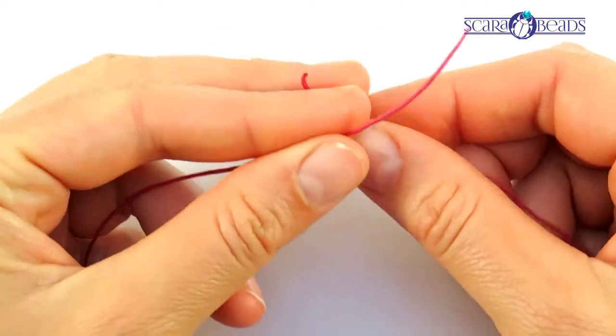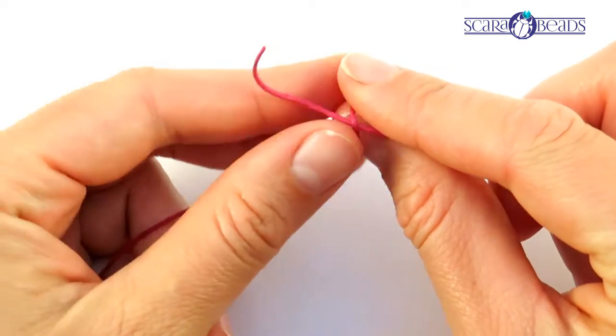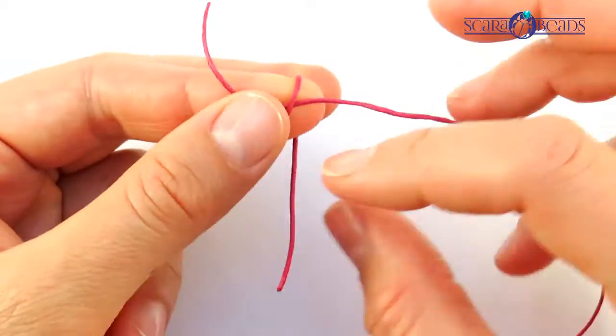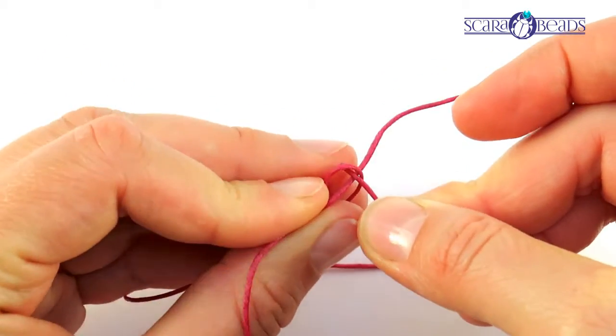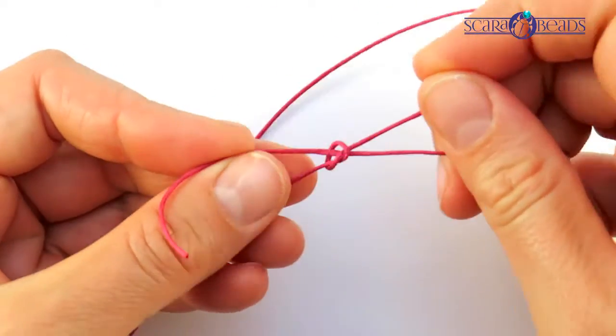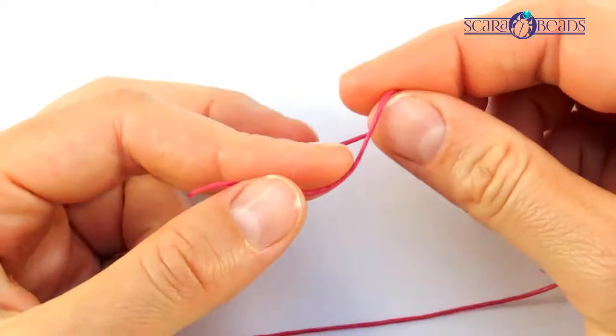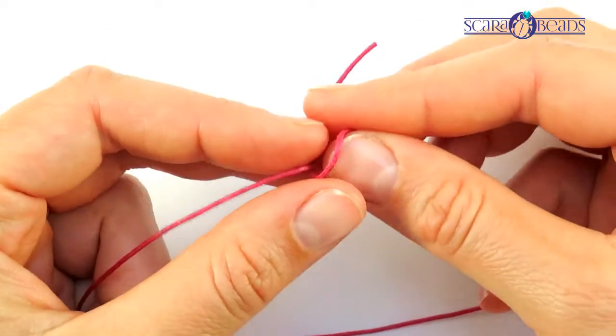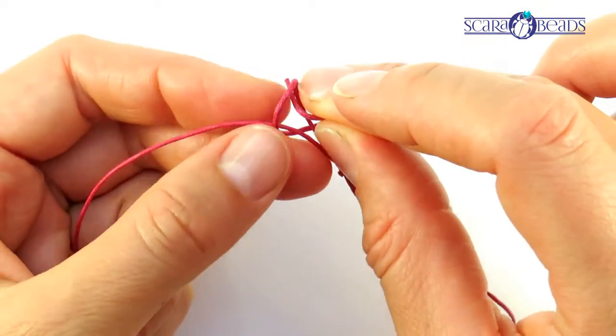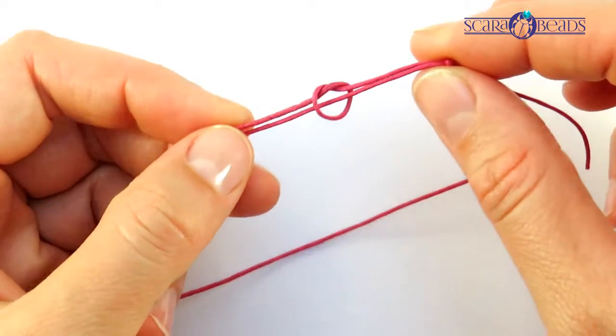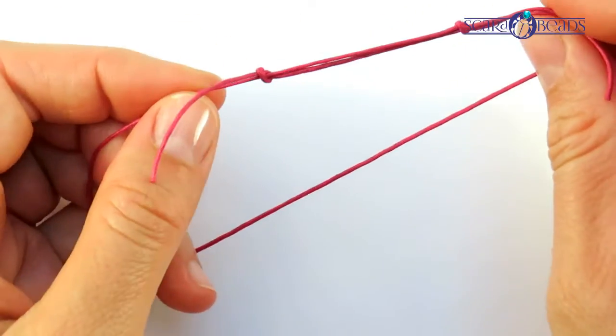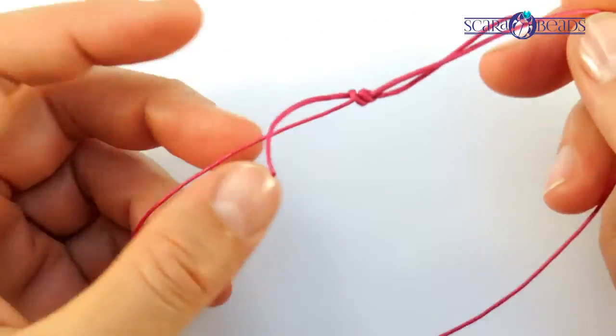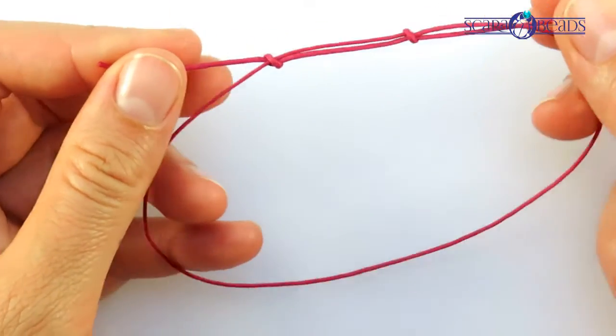If on one end you will tie one simple or overhand knot and on the other side the second one, that will lead you to get a flexible fixing structure or so-called fisherman knot.